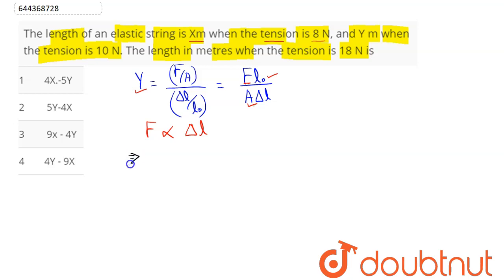Now here it says, on 10 N, the string length becomes X meter. So 8 equal to K into change in length will be our X minus original length as L0. Now here we can say, on 10 N force, this becomes our 10 equal to K into we have here Y minus we can say as L0.